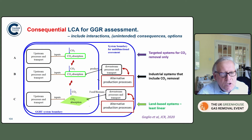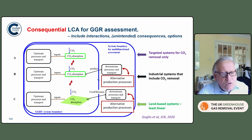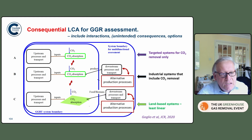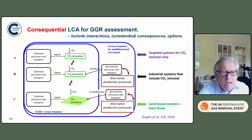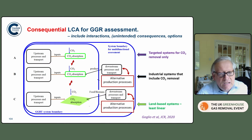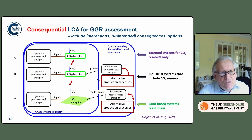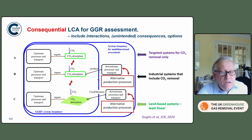The consequential LCA not only looks at the downstream products, but is also considering what the consequences are in the broader system, which means that alternative production processes can be taken into play. The inside of it between the three systems can be different, and so it's the least linear of the three. The land-based systems remain the least linear. This gets a lot more complicated because it includes consequences both intended and unintended in time.